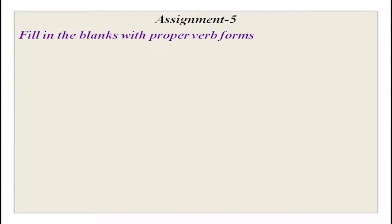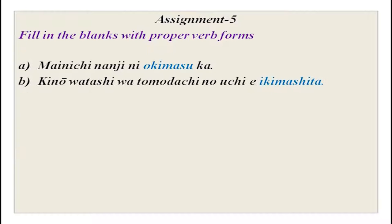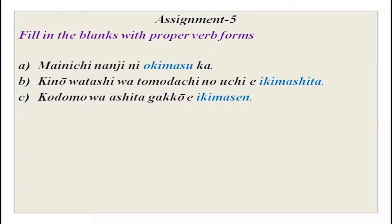Now fill in the blanks with proper verb forms. Mainichi nanji ni okimasu ka? Kinou watashi wa tomodachi no uchi he ikimashita. The verb is ikimashita — past tense for kinou. Kodomo wa ashita gakkou he ikimasen — negative.